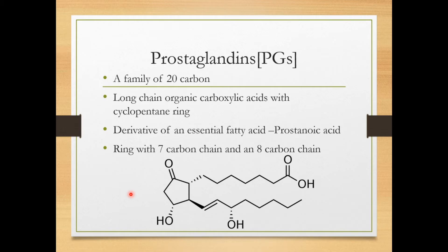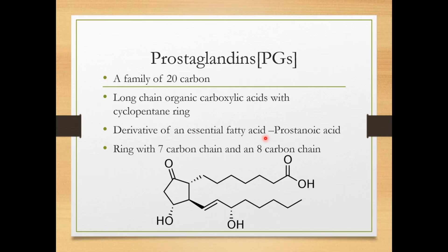Now let's move on to the second example of derived lipids — prostaglandins, shortly known as PGs. Prostaglandins are a family of 20 carbon atoms in total. They are long-chain organic carboxylic acids with a cyclopentane ring. Prostaglandins are derivatives of an essential fatty acid called prostanoic acid, which is actually synthesized from arachidonic acid. Arachidonic acid is an unsaturated fatty acid found in liver and glandular organs.